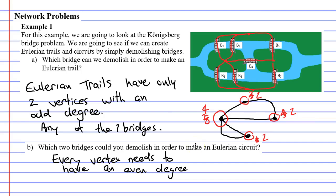I would like you to have a little explore and figure out what two bridges you can demolish to make Eulerian circuits. I found four pairs of bridges that I could demolish in order to create an Eulerian circuit. That concludes Example 1. Remember to read the description below for links to workbooks that relate to this video.